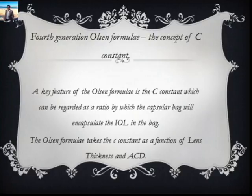This brings us to the Olsen formula, developed by a surgeon from Denmark. Many consider this a fifth-generation formula, and it introduces the concept of the C-constant. The C-constant can be thought of as a ratio by which the empty capsular bag — after removing the crystalline lens — will encapsulate and fix an IOL following in-the-bag implantation. This approach predicts the IOL position as a function of preoperative anterior chamber depth and lens thickness, combining these two into the C-constant.